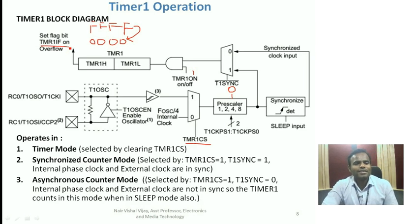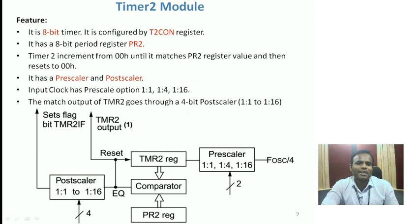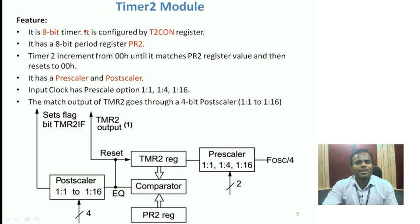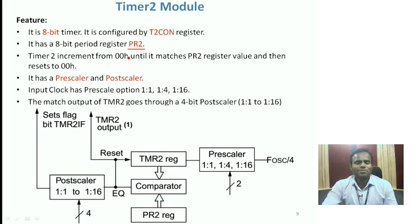Moving on to Timer 2 module — Timer 2 is an 8-bit timer configured by the Timer 2 Control register. This timer is different from the other two because it does not overflow from its maximum value. Instead, it continuously compares its timer register value with a register called PR2. Whenever the Timer 2 register matches the value in the PR2 register, it creates an interrupt and then resets back to 0x00. So Timer 2 starts incrementing from 0x00 up to the value in PR2, creates an interrupt on match, and overflows to 0x00.